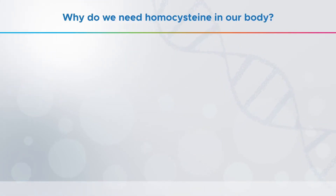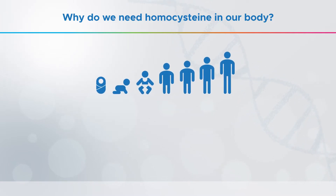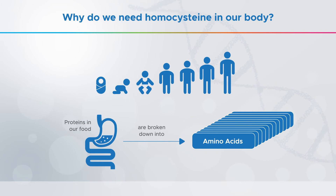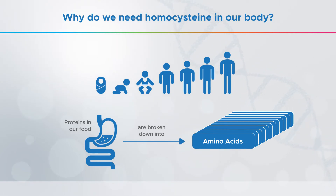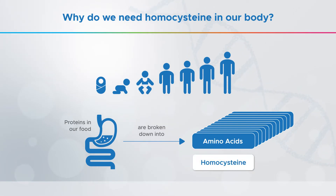We all need homocysteine to make energy for our cells and to produce other chemicals important for growth and development. Proteins in our food are broken down into amino acids, which are small enough to be absorbed into the bloodstream. Although hundreds of amino acids exist, the human body only needs about 20 different amino acids to grow and function properly.